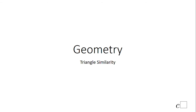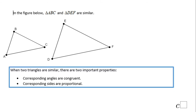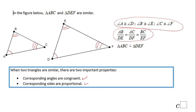Welcome, or welcome back, at C-Square. In this video clip we're going to talk about triangle similarity. Here in this figure we have two triangles that are similar. What is very important about similar triangles: they have corresponding angles that are congruent — for example, angle A and D, B and E, C and F — and also they have corresponding sides that are proportional, as you can see right here.